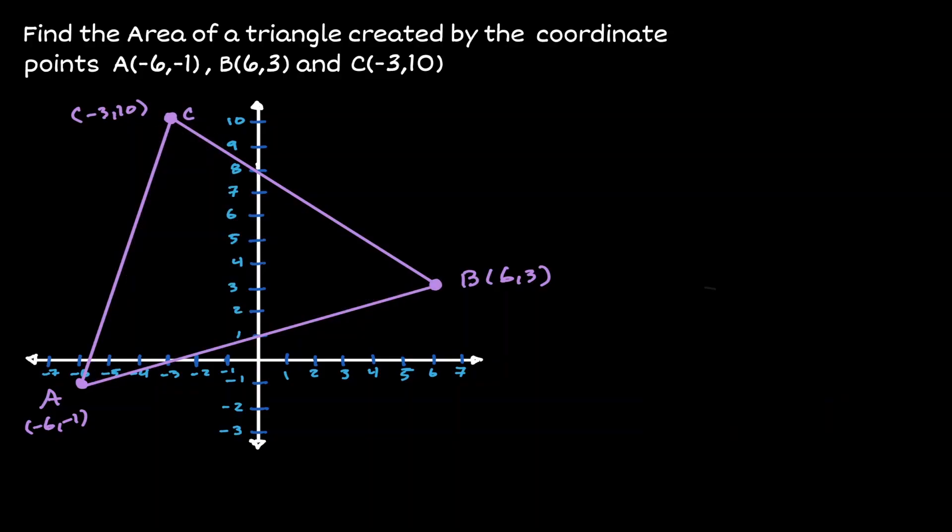Let's start by talking about the setup for the shoelace method. First, we're going to choose one point in our figure. I'm going to choose point A. Then I'm going to be listing the x and the y value at this point. I'm going to put -6 underneath A and -1 underneath A.